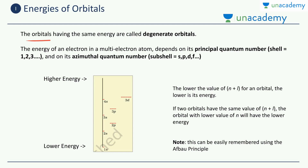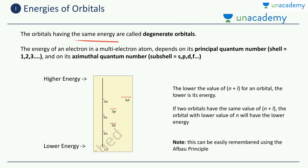As a special note, the orbitals which have the same energy are known as degenerate orbitals. So if both orbitals have the same energy, we call them degenerate orbitals.